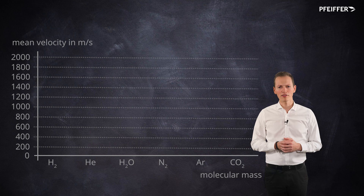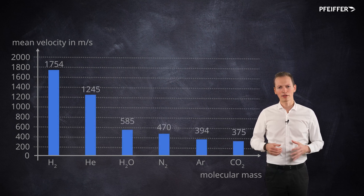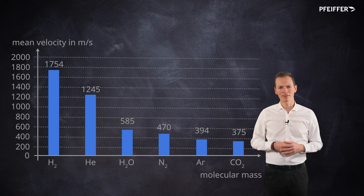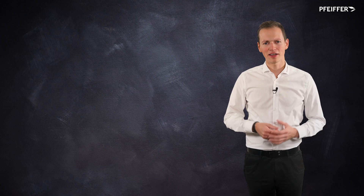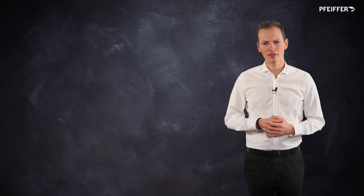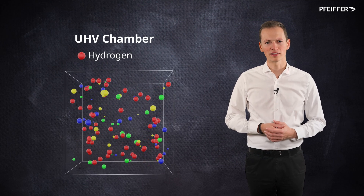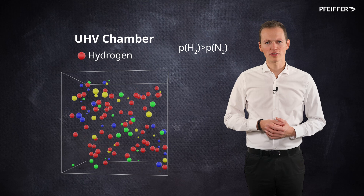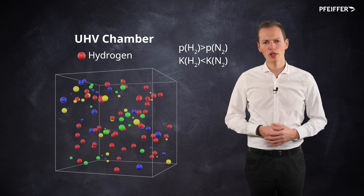The lighter the gas, the faster its molecular motion. In light gas molecules, the backflow velocity towards the high vacuum side is therefore higher than for heavier molecules. With light gas molecules, there are thus more gas particles present on the high vacuum side as a result. Therefore, the pressure is correspondingly higher and the compression ratio lower.